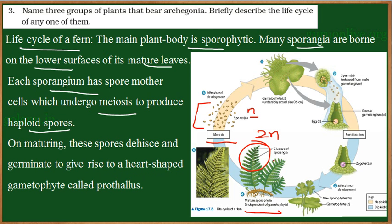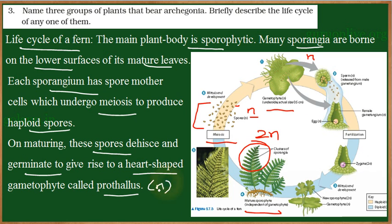A plant body which is diploid in nature gives rise to spores which are haploid. When these spores develop or germinate, they give rise to a plant which is gametophytic — having half the number of chromosomes. The plant which forms from the spore also has half the number of chromosomes, so it is haploid in nature. In the initial stage, this plant is heart-shaped and is called the prothallus.